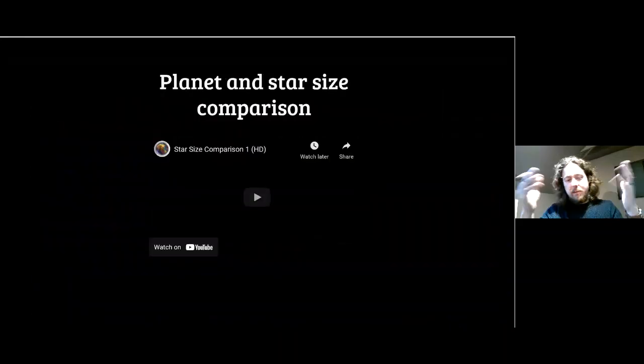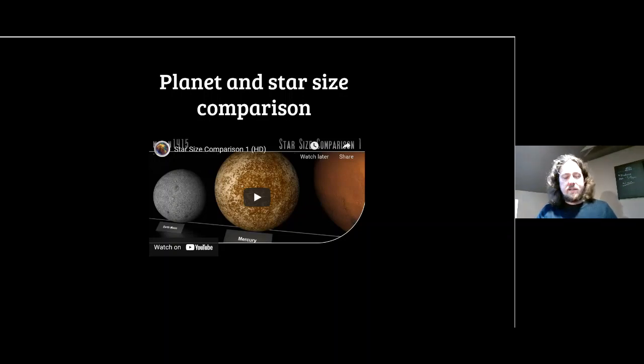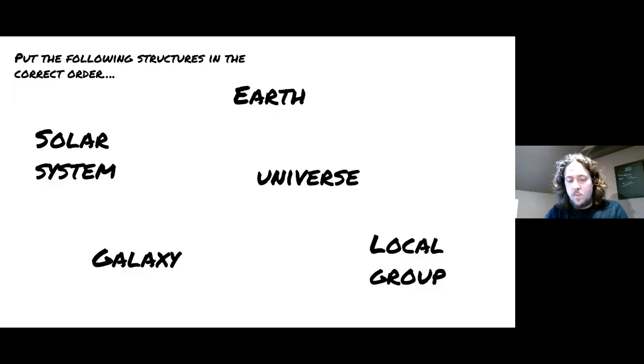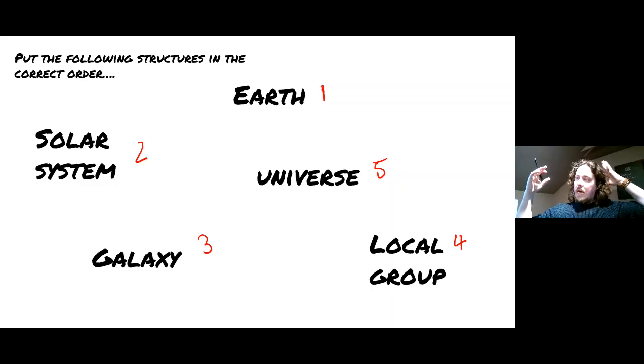Can you put the following structures in the correct order? The smallest structure on this list here is the Earth. Then it would be the solar system, and then a galaxy. The local group is a local cluster of galaxies. And then all of these things are contained within the universe. The universe is all of the space and stars and galaxies. The universe is the space which contains everything.